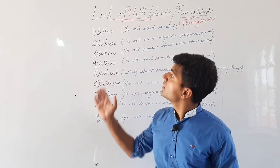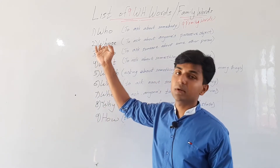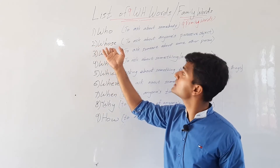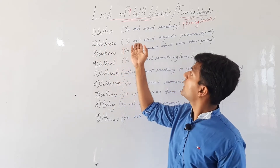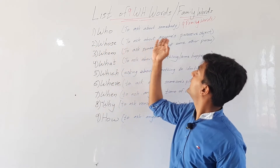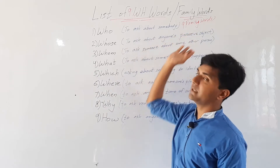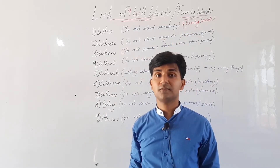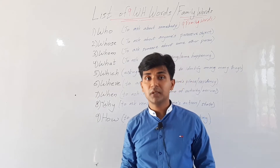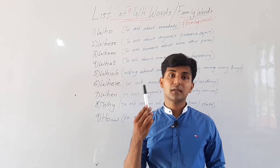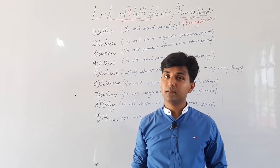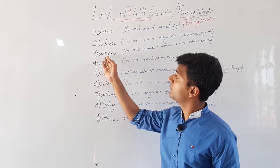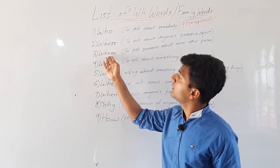Then there is the word 'whose' — W-H-O-S-E. 'Whose' is used to ask about anyone's possessive object. It is used to ask about any person's possessive thing, for example, 'Whose marker is this?' In that situation we use 'whose.'